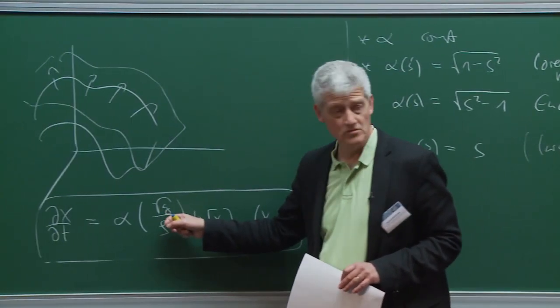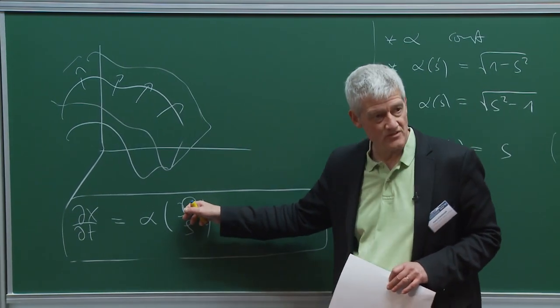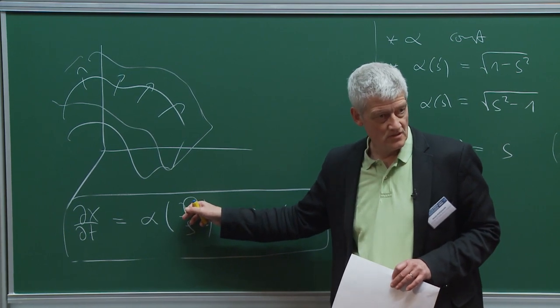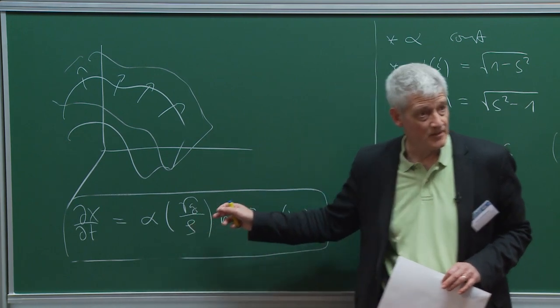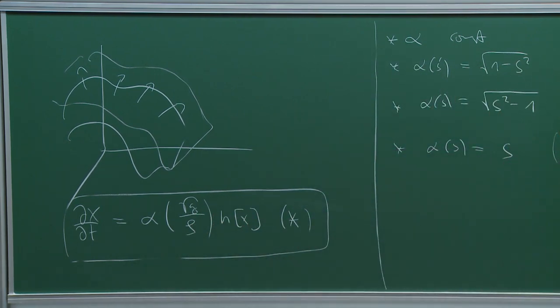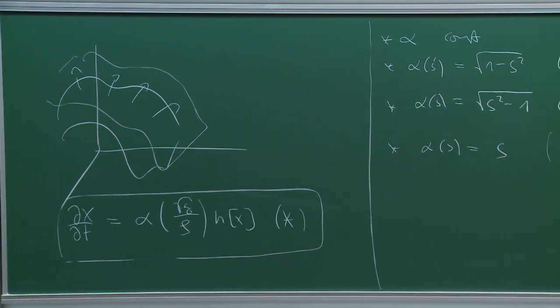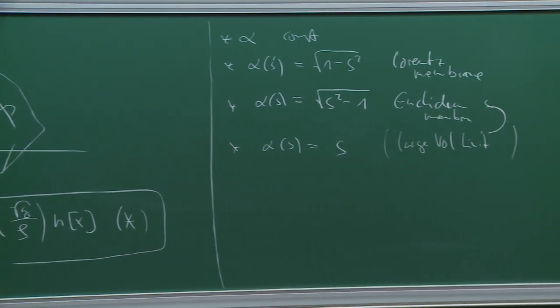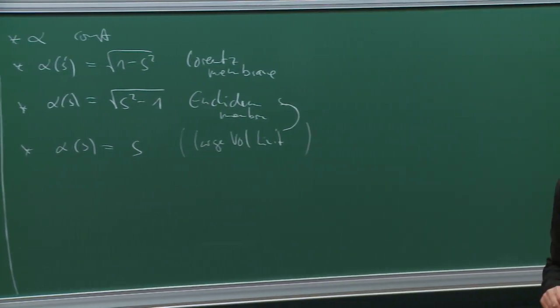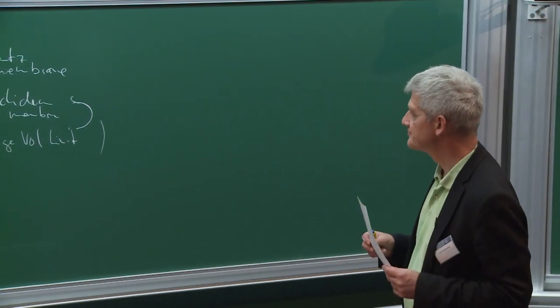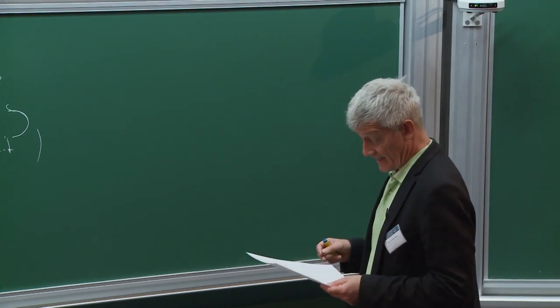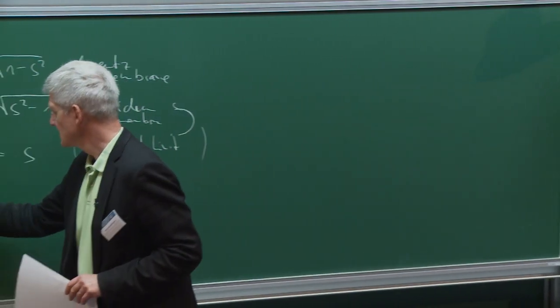When S becomes one, these cases become degenerate somehow. What's happening there? I mean, this thing depends on x, right? So it depends on time. So this is changing all the time. Rho is fixed. All right.